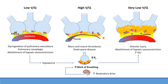We also learned that a certain percentage of patients may have micro or macrothrombosis leading to dead space disease — areas of the lungs that are ventilated but not perfused. The VQ ratio in these areas of the lungs will be high. As you can see, it is all connected together. The low VQ ratio pathology eventually may lead to alveolar injury and self-inflicted lung injury, exaggerated by the increased respiratory drive that leads to increased work of breathing.